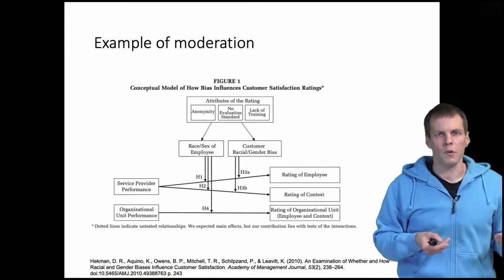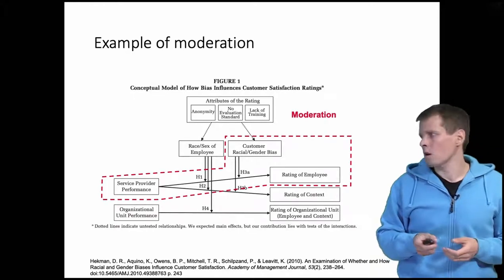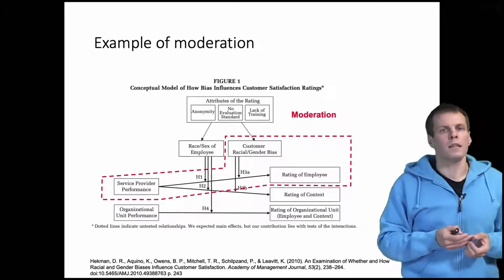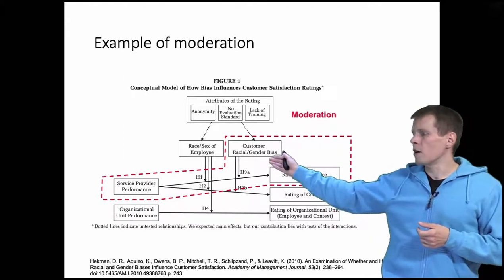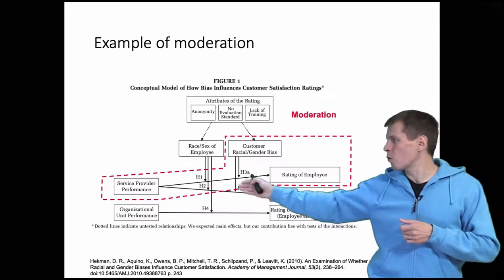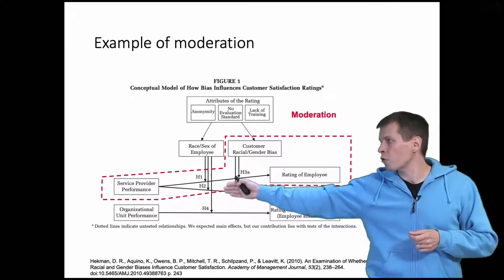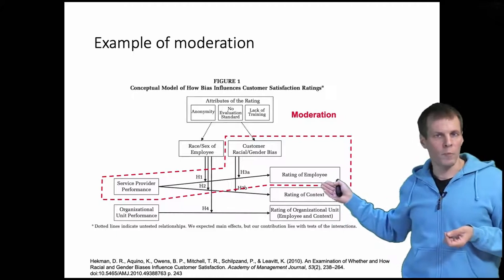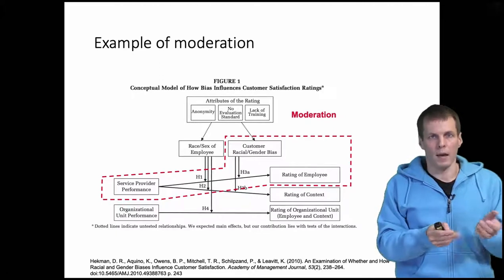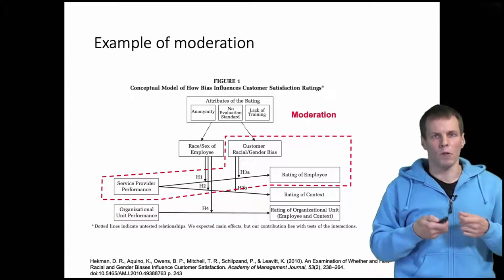So our first example is Heckman's paper, and Heckman is studying a moderation model. For their hypothesis 3a, they are saying that because of customer racial or gender bias, women or minorities are rewarded less for performance than white men. So the effect of service provider performance is assumed to be positive on rating of employees, but that positive relationship is assumed to be less for women and minorities compared to white men. So this is moderation. How do we do moderation in regression analysis?